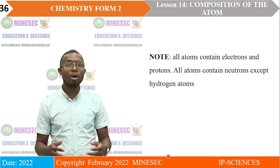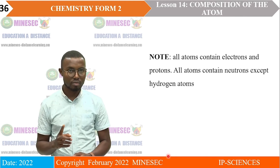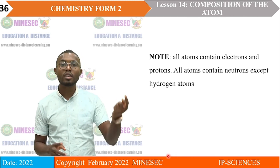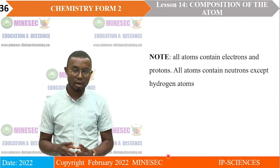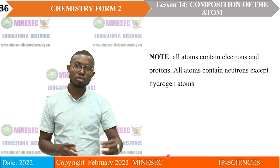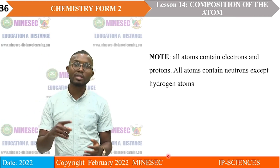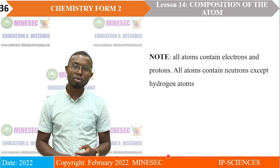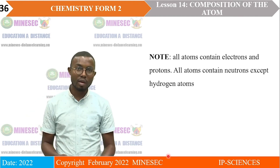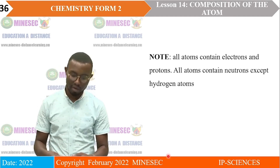Note: all atoms contain electrons and protons. All atoms contain neutrons except hydrogen atoms — the hydrogen atom does not contain neutrons. Apart from hydrogen, all other atoms contain electrons, protons, and neutrons. We shall see how to determine the number of protons, electrons, and neutrons in one atom of an element.